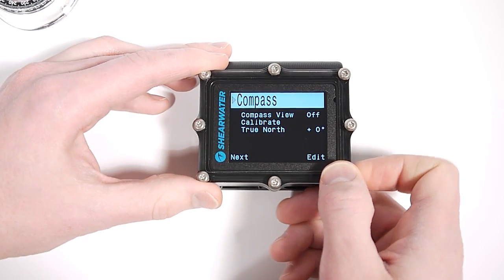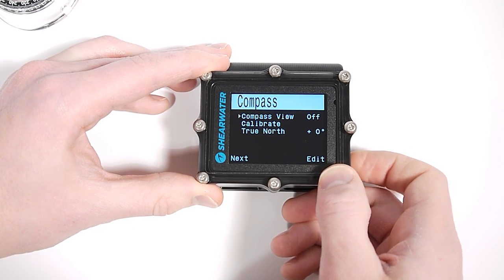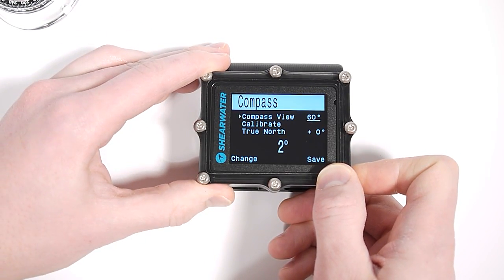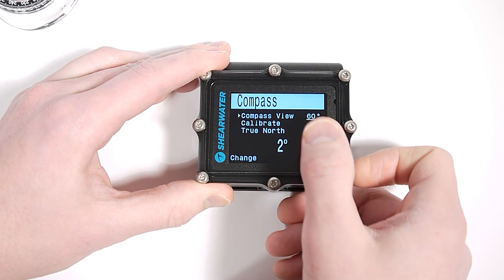In terms of battery life, the compass itself is very low power. You're not going to notice better battery life with the compass off. But you can turn it off if you don't like it.